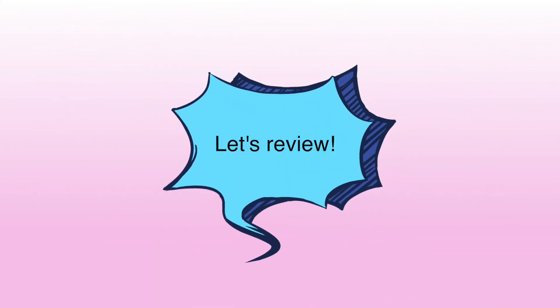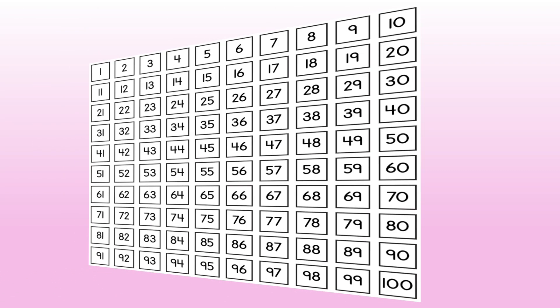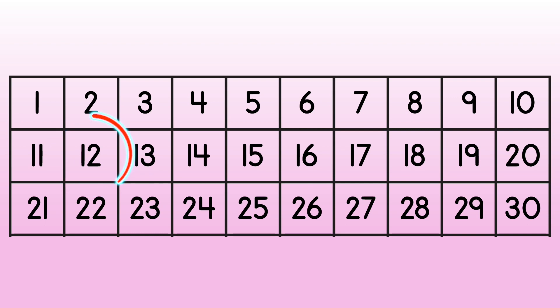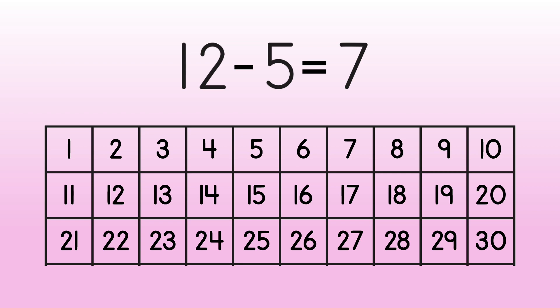So, let's review what we've learned today. Besides helping with addition, hundreds charts can help us to subtract. 12 minus 5 equals blank. Find 12. Count back 5. 1, 2, 3, 4, 5. The difference is 7.